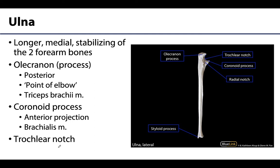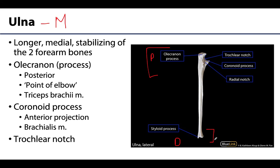Now moving on to the two forearm bones: the ulna and the radius. The ulna is the longer bone and the more medial of the two. It plays a big role in stabilization and is the major player in the elbow joint. The proximal portion of the ulna is considerably larger than its fairly small distal end, reflecting its dominant role at the elbow joint but minimal role at the wrist joint — which is the flip side when discussing the radius.